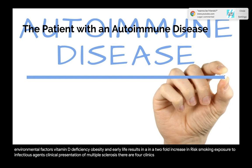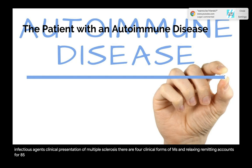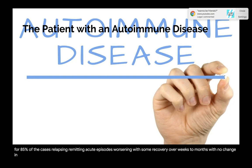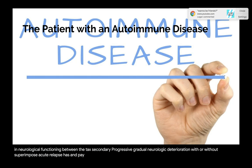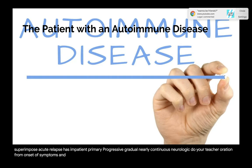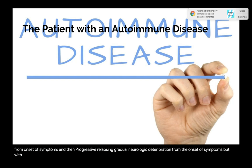There are four clinical forms of MS. Relapsing-remitting (RRMS) accounts for 85% of cases — acute episodes worsening with some recovery over weeks to months, with no change in neurological functioning between attacks. Secondary progressive (SPMS) involves gradual neurologic deterioration with or without superimposed acute relapses. Primary progressive (PPMS) involves gradual, nearly continuous neurologic deterioration from onset. Progressive relapsing involves gradual neurologic deterioration from onset with subsequent superimposed relapses and is uncommon.